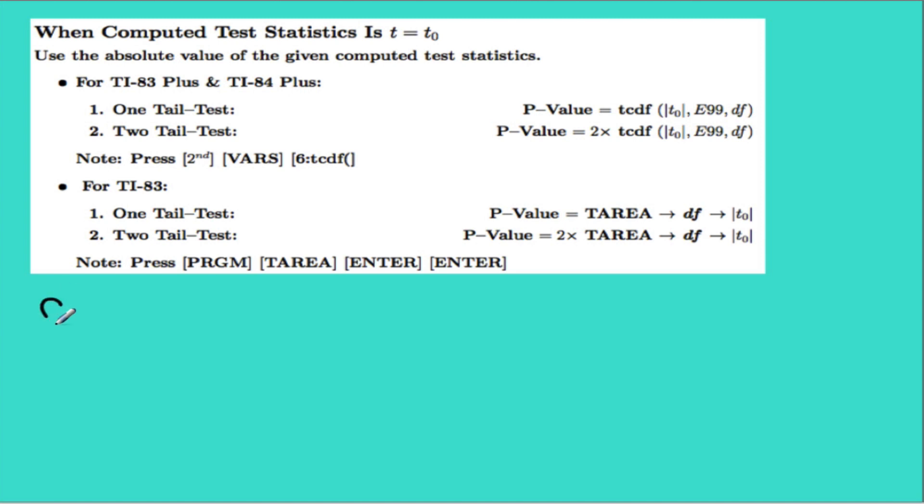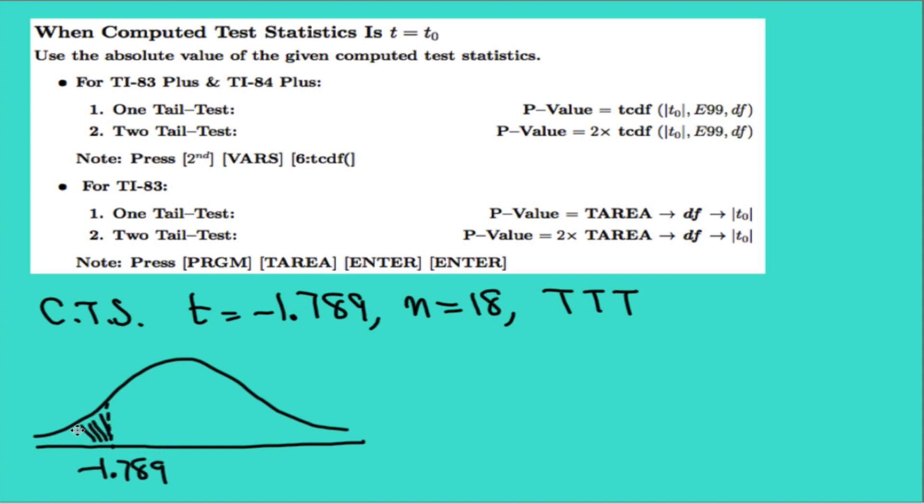So let's say our computed test statistic here is T of negative 1.789 with the sample size 18 and this is a two-tailed test. So if we look at the t distribution, mark our computed test statistic, the p-value will be twice of this area.